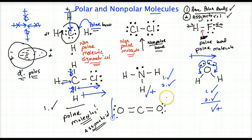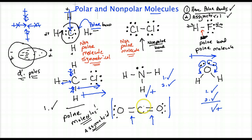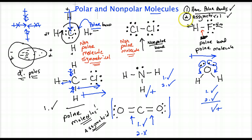CO2 doesn't have any central non-bonding electrons to bend it down, so it stays linear. By staying linear, these polar bonds are canceled out by symmetry. Yes, it does have polar bonds — the first criteria is satisfied. But the second is not satisfied: this is not asymmetrical. It is very symmetrical, so the polar bonds cancel out. This is a nonpolar molecule.